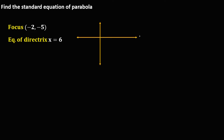In the plane, we have positive X, negative X, positive Y, and negative Y. From the given coordinate of the focus, X is negative 2 and Y is negative 5, so we plot the point at (−2, −5).